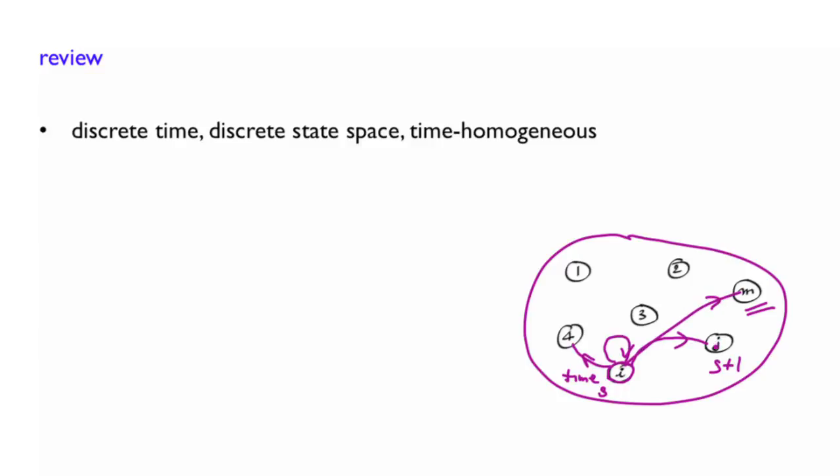And then at time s plus 1, someone hits the drum and you jump again, and so on and so forth. So you can think of a very active frog jumping from lilies to lilies on the pond and following a regular drumbeat.